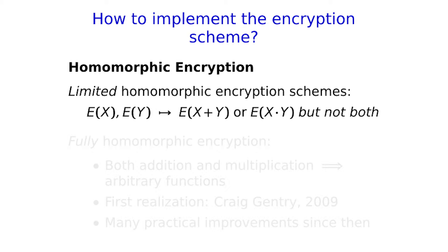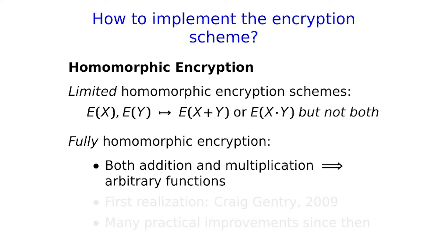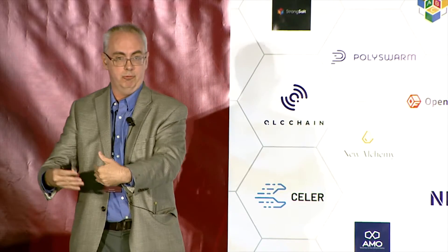There are a couple of ways of thinking about homomorphic encryption. One more limited type has been around since the 80s and 90s: given an encryption of some number x and some number y, you can compute the encryption of their sum or their product. But until fairly recently, we didn't know how to implement an encryption scheme allowing both addition and multiplication on encrypted data. Fully homomorphic encryption allows you to do both. And once you can do addition and multiplication, that's a complete set of operations — just like AND, OR, NOT can build any Boolean circuit — meaning you can implement arbitrary functions on encrypted data.